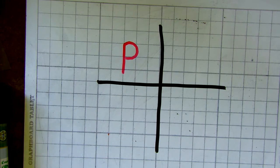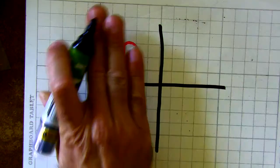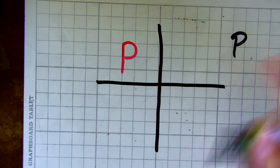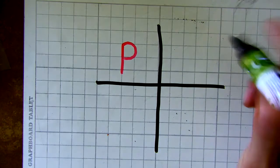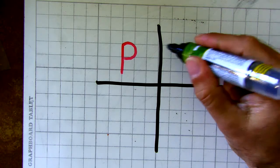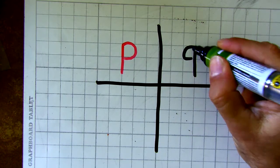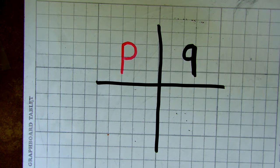Camilla, help us out. First quadrant, yep. And if it's reflected, is it going to be like this over in the first quadrant? It's going to be upside down — it looks like it's about two over, so it's going to be like that. I guess it's going to be a nine.